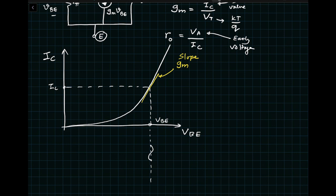An important question: would you see an inversion here — from VBE to IC? The answer is no. If the small signal VBE increases, the collector current also increases. Hence there is no inversion when we plot the characteristics between VBE and IC in small signal terms.